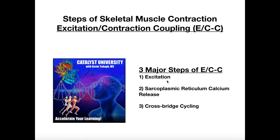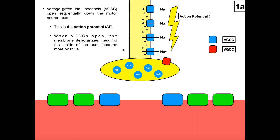So let's begin with the initial excitation of the muscle fiber. Here we have the axon of the motor neuron, and this enlargement down here at the bottom is the synaptic end bulb. This is going to be where vesicles containing a neurotransmitter called acetylcholine are stored. Down here is a specialized region of the muscle fiber called the motor end plate. It's going to contain these receptors, which are sensitive to acetylcholine. But we're not actually going to have any muscle contraction until this acetylcholine is released, and that's going to be triggered by an action potential moving down the axon of this motor neuron.